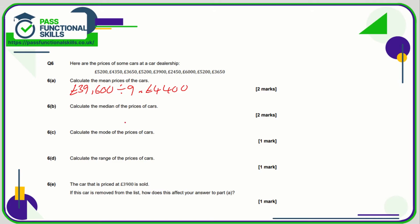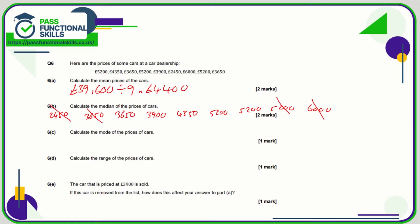The median price is the middle price when put in ascending order: £2,450, £3,650, £3,650, £3,900, £4,350, then three £5,200s and a £6,000. To find the median, chop one off the left and one off the right and keep going. Because it's an odd number, we isolate one in the middle. So the median is £4,350.